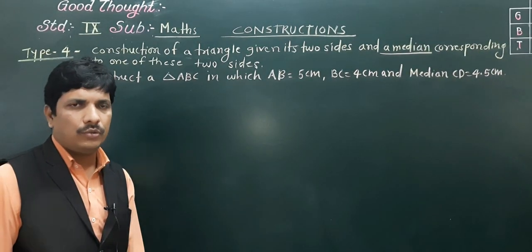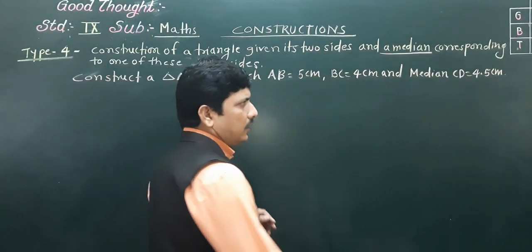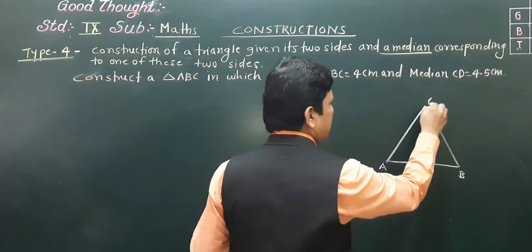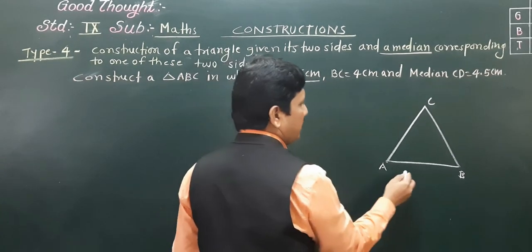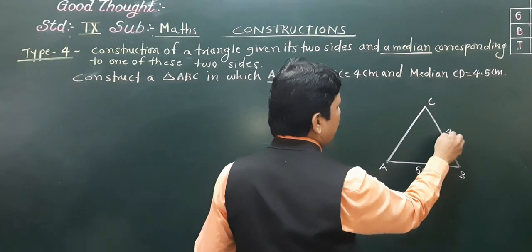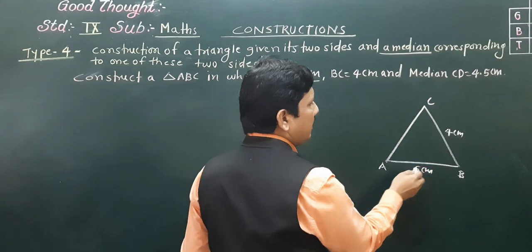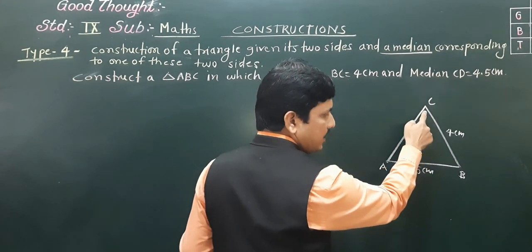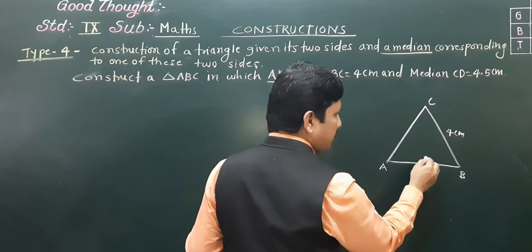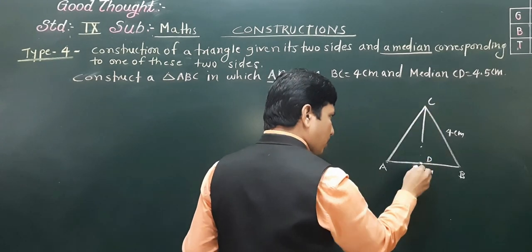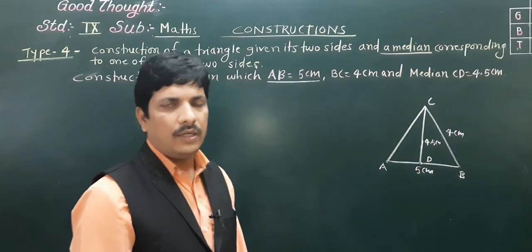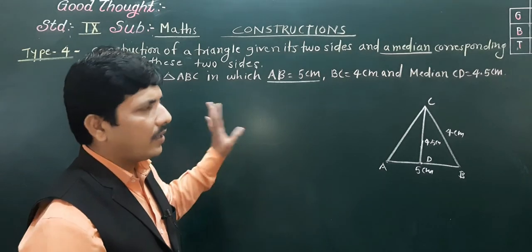equal to 4.5 centimeter. These three things are given. If we think about a rough sketch, suppose this is triangle ABC. AB is equal to 5 centimeter, BC is equal to 4 centimeter, and the median CD — where D is the midpoint of AB — is equal to 4.5 centimeter. With the help of these three things, we need to construct the required triangle.